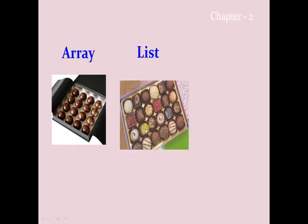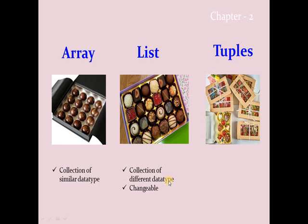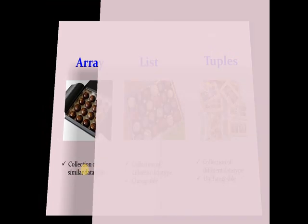Do you remember the word array in C++? Imagine a sweet box containing only one kind of sweet — that represents an array as a collection of similar data types. Now think of a box with different types of sweets — that is a list, a collection of different data types. A tuple is also a collection of different data types, but packed and unchangeable. In summary: list is changeable, tuple is unchangeable, and array is a collection of similar data types.